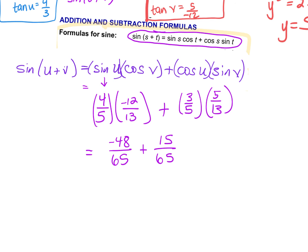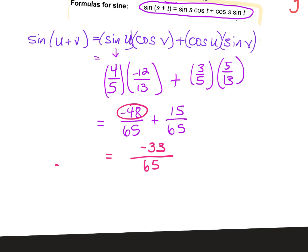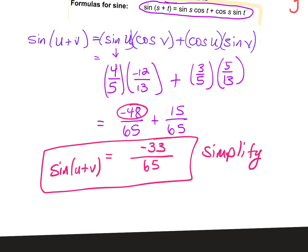Maybe you input the wrong trig function in the wrong place, but just make sure. Now, since we have a common denominator, we can combine like terms in the numerator. Negative 48 plus 15 is negative 33. So the sine of U plus V for this triangle is negative 33 over 65. You always simplify if you can. In this case, obviously, this does not simplify.